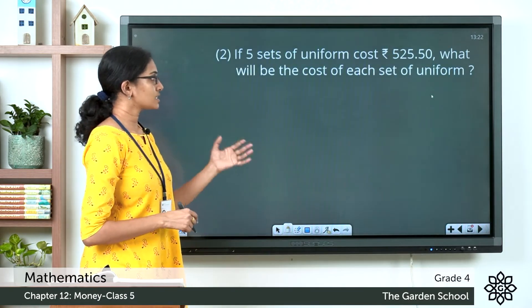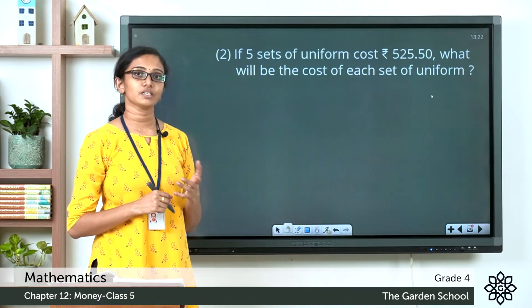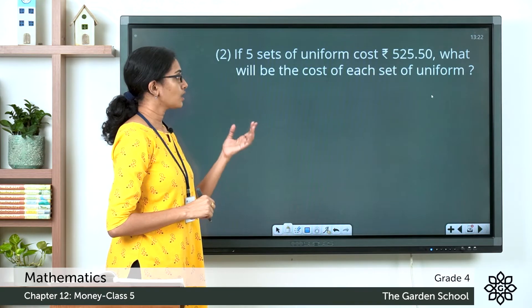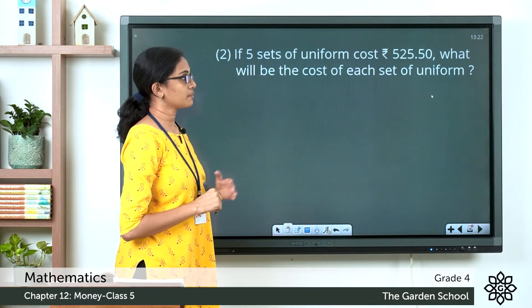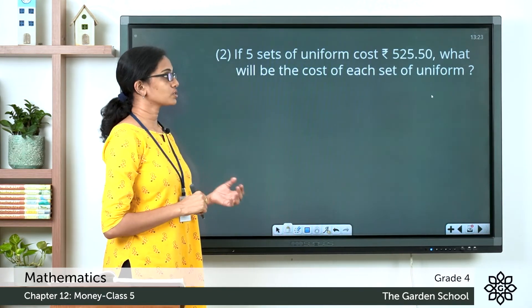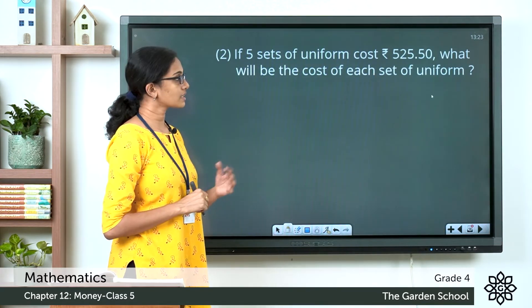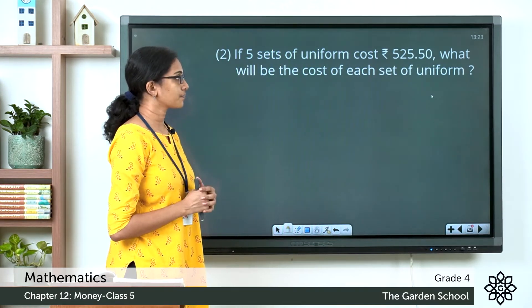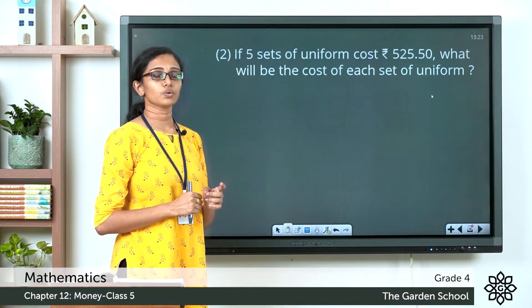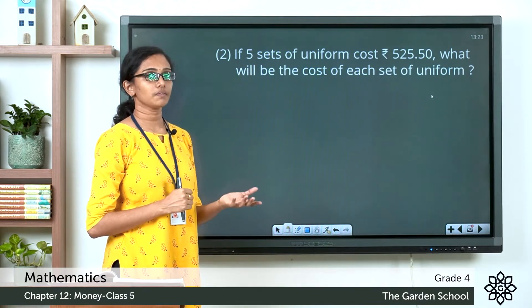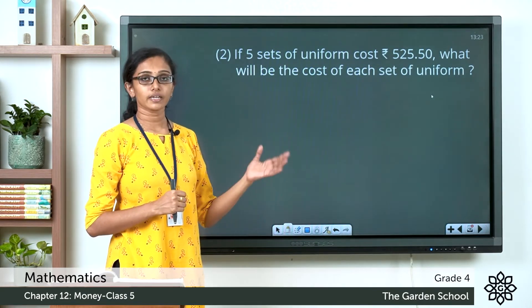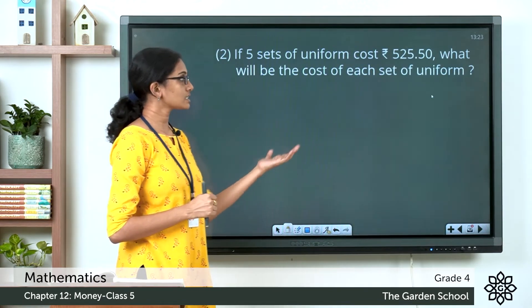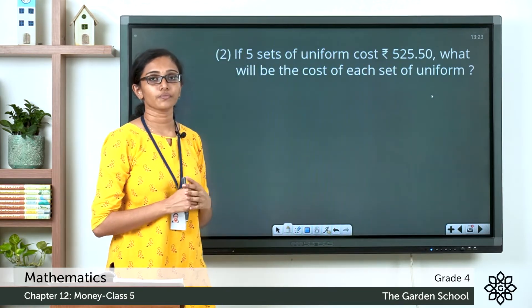I hope you understood that. Now let's see one more example — a word problem from exercise 12.2. If 5 sets of uniform cost 525 rupees 50 paise, what will be the cost of each set of uniform? The cost of 5 whole sets is given, and we are asked to find the cost of just one set. To find that, divide the total amount by the number of uniforms.